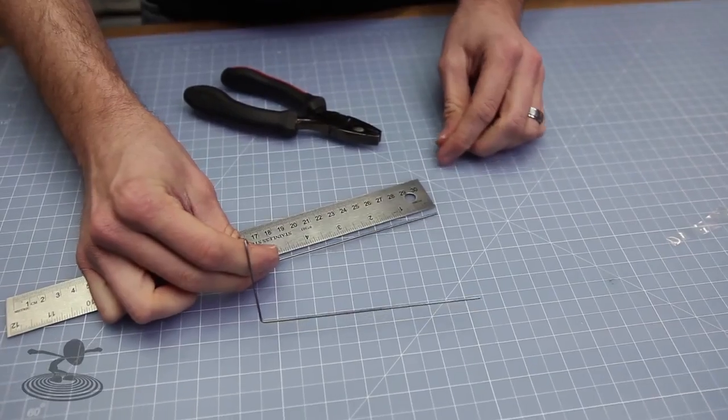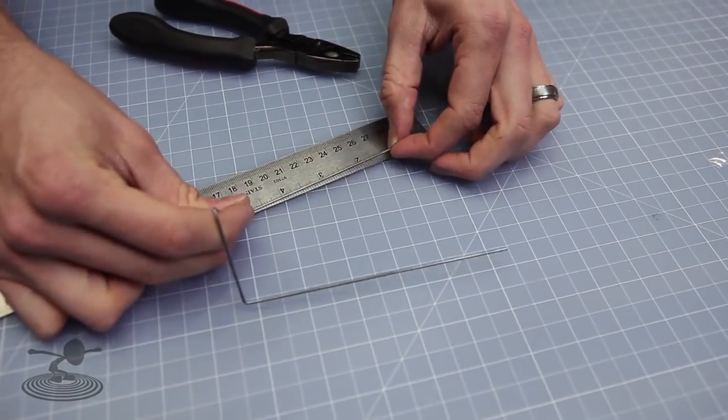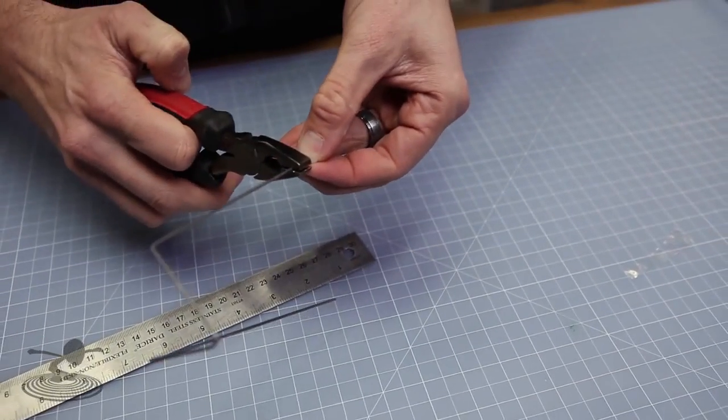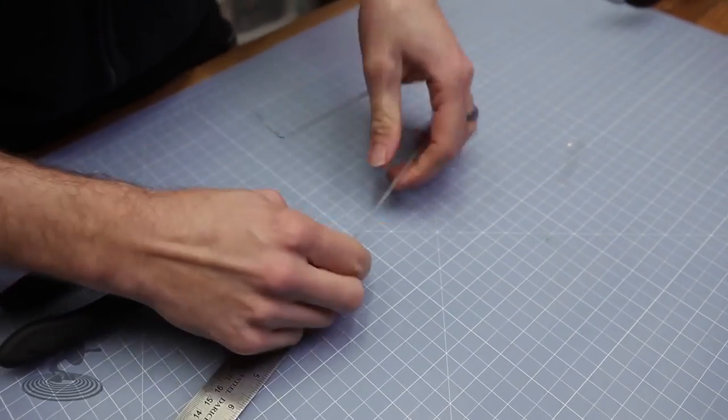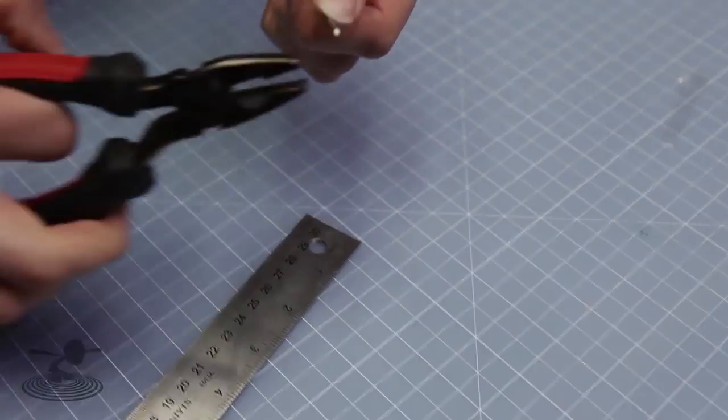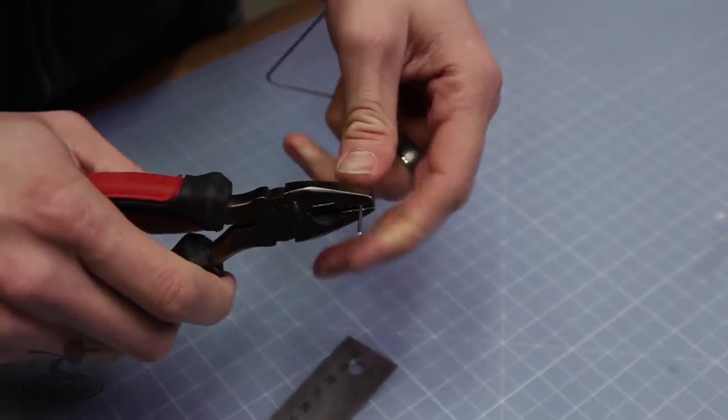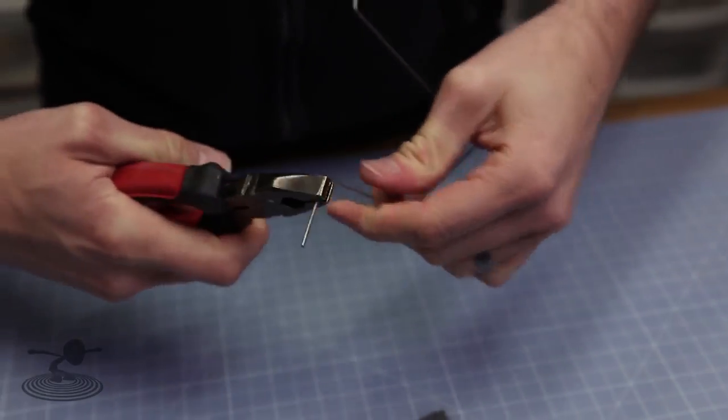Next step is to measure about an inch and a quarter, bend it half, and then an inch and a quarter and bend it again. Now I'm sizing this for our wheels that we included in the kit.